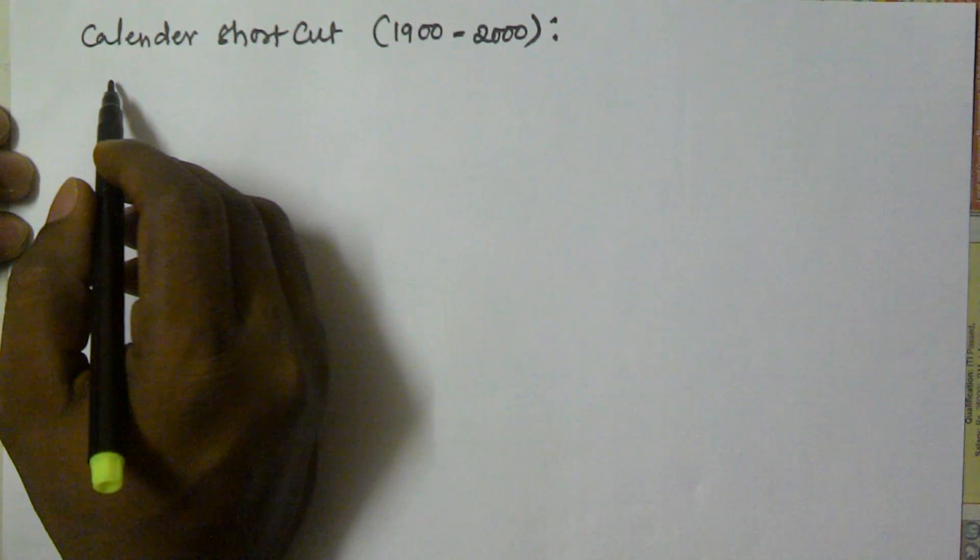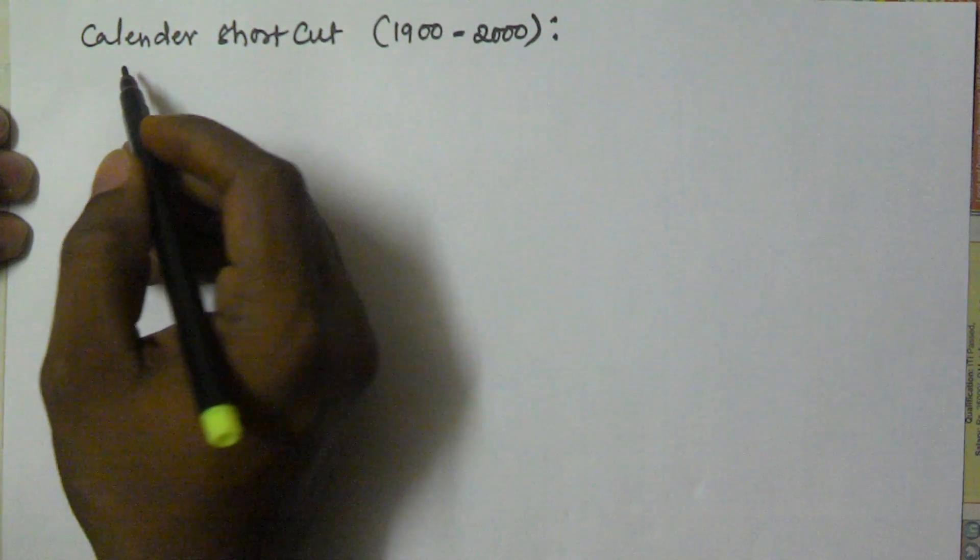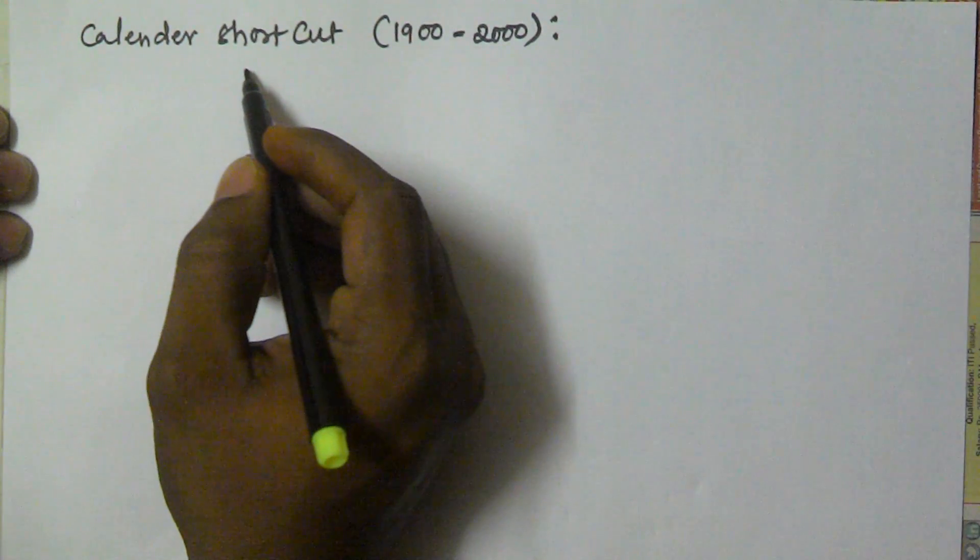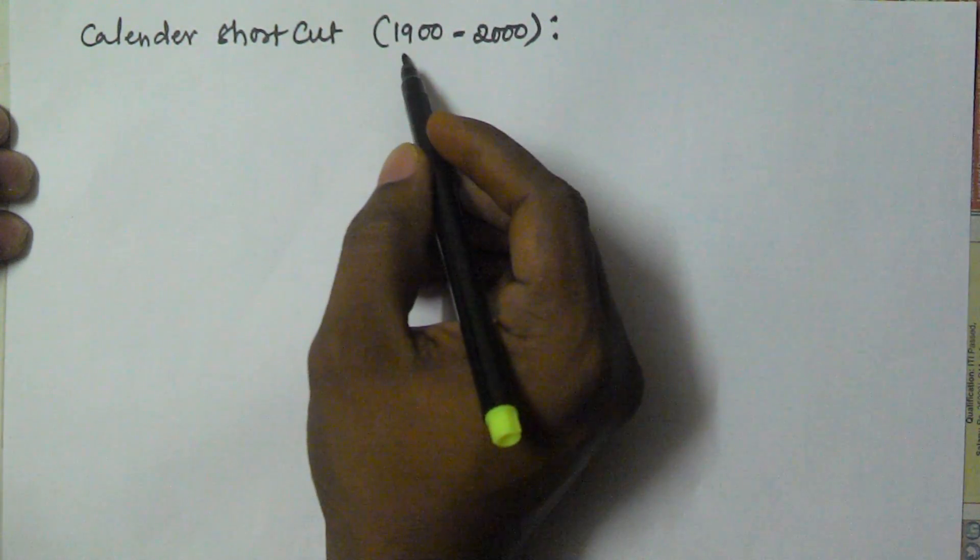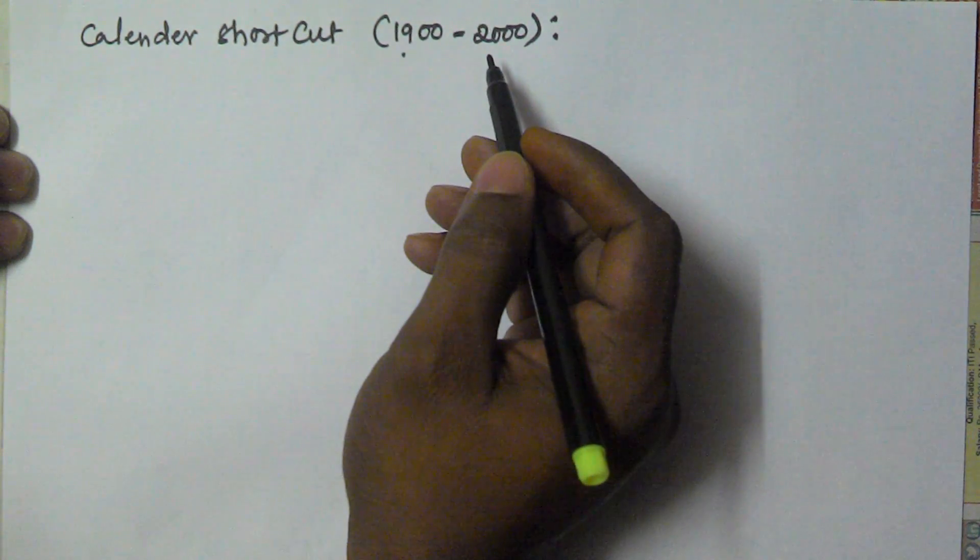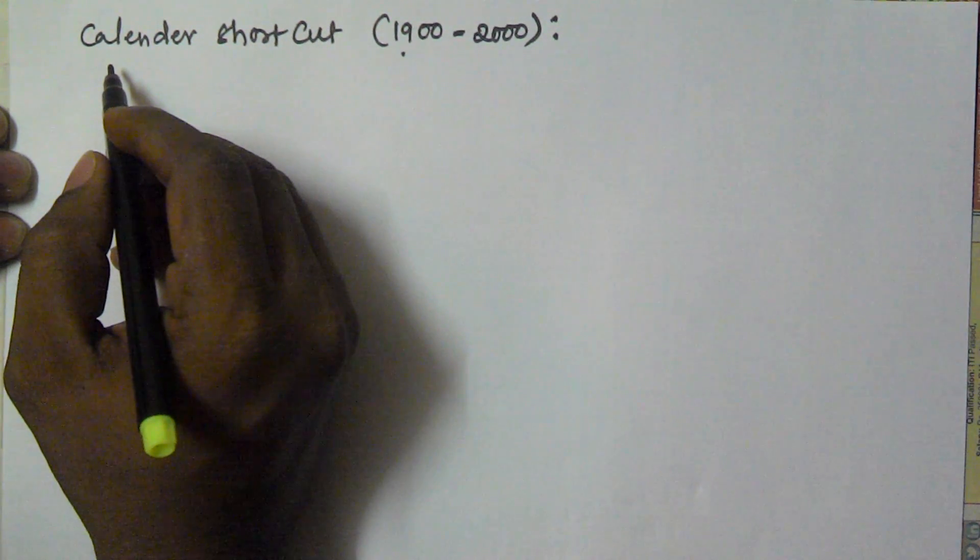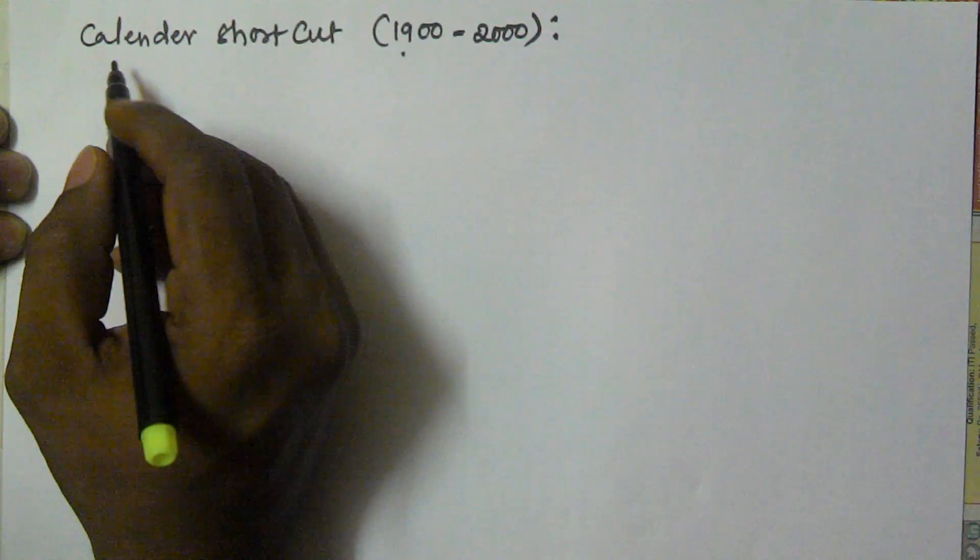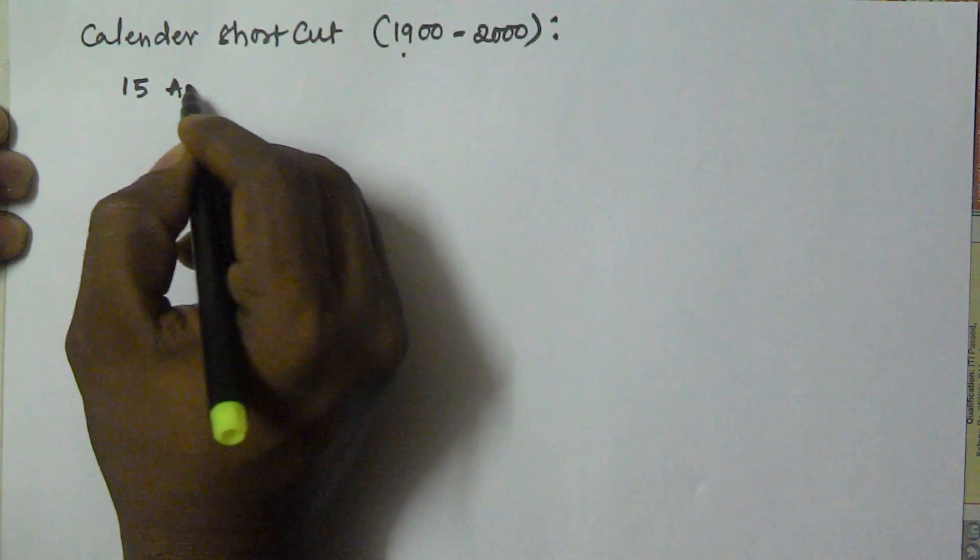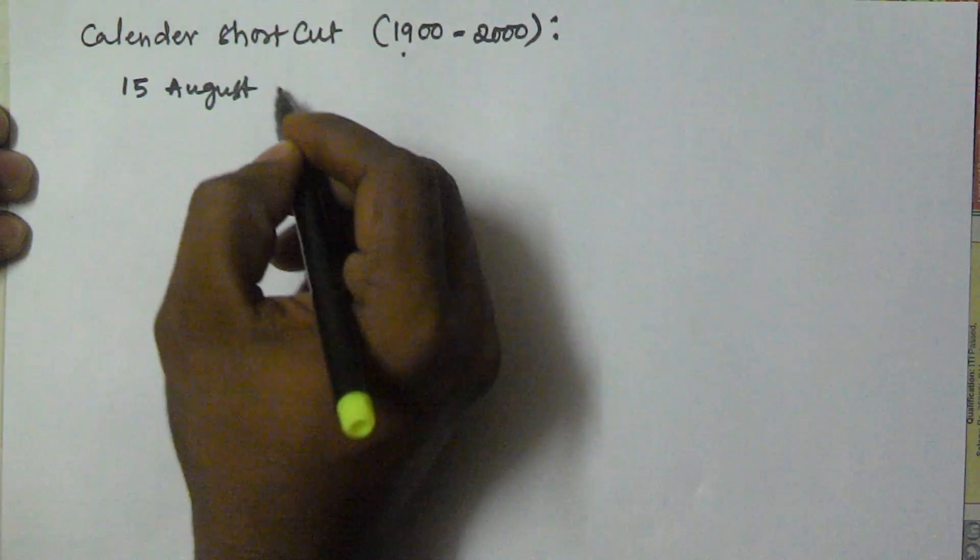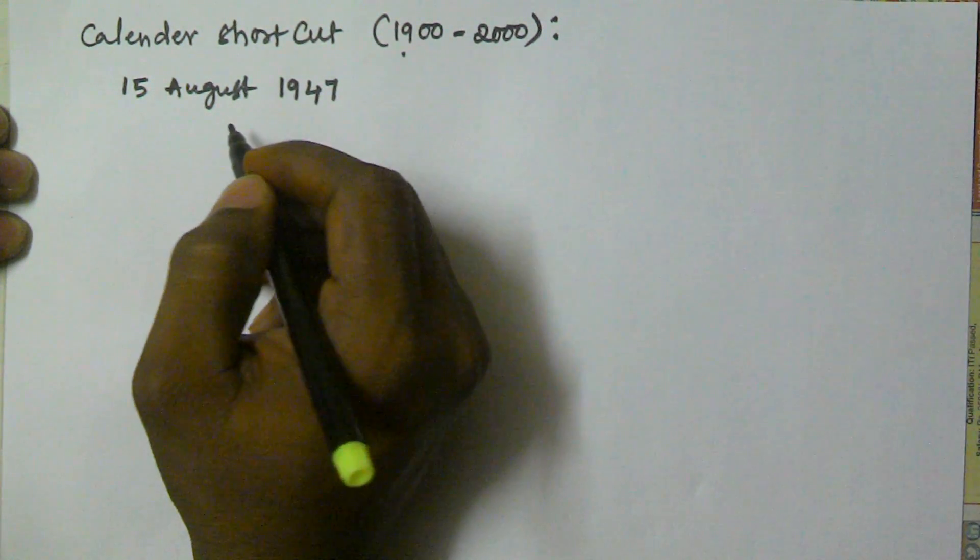Hello friends, in this video I am going to show you a shortcut to find the weekday of a given date for the range 1900 to 2000. Now let's find the weekday of the date 15th August 1947.